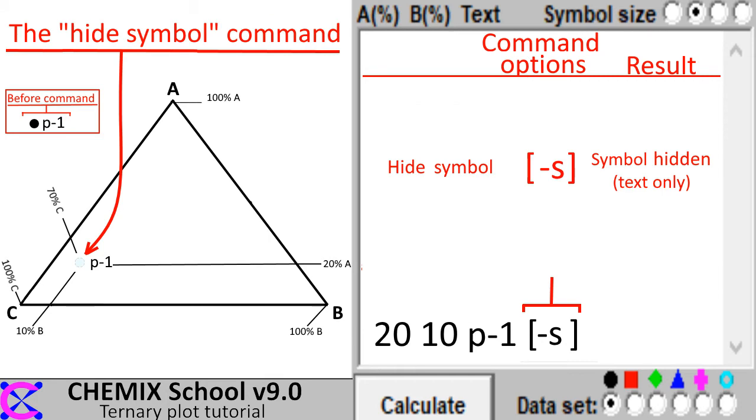It is possible to hide a symbol by using the minus symbol command. Using this command will only hide the symbol, not the symbol text.